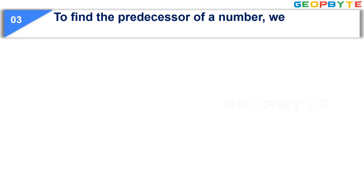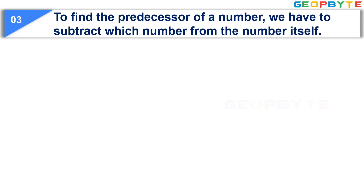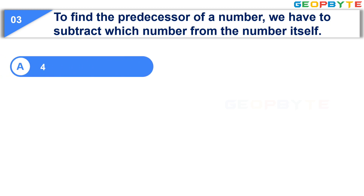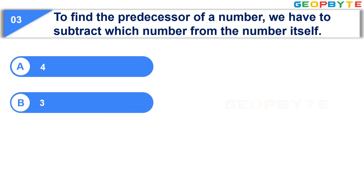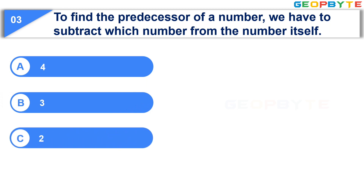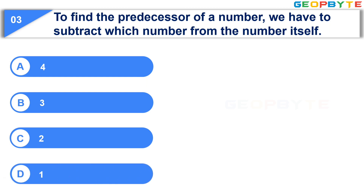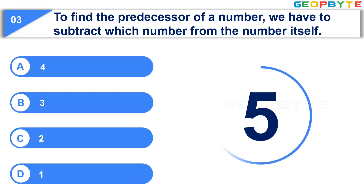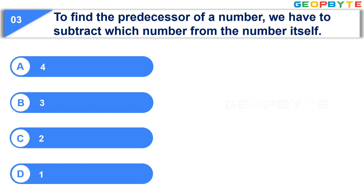To find the predecessor of a number, we have to subtract which number from the number itself. Option A: 4. Option B: 3. Option C: 2. Option D: 1. Your time starts now. Your time is up and the correct answer is Option D, 1.